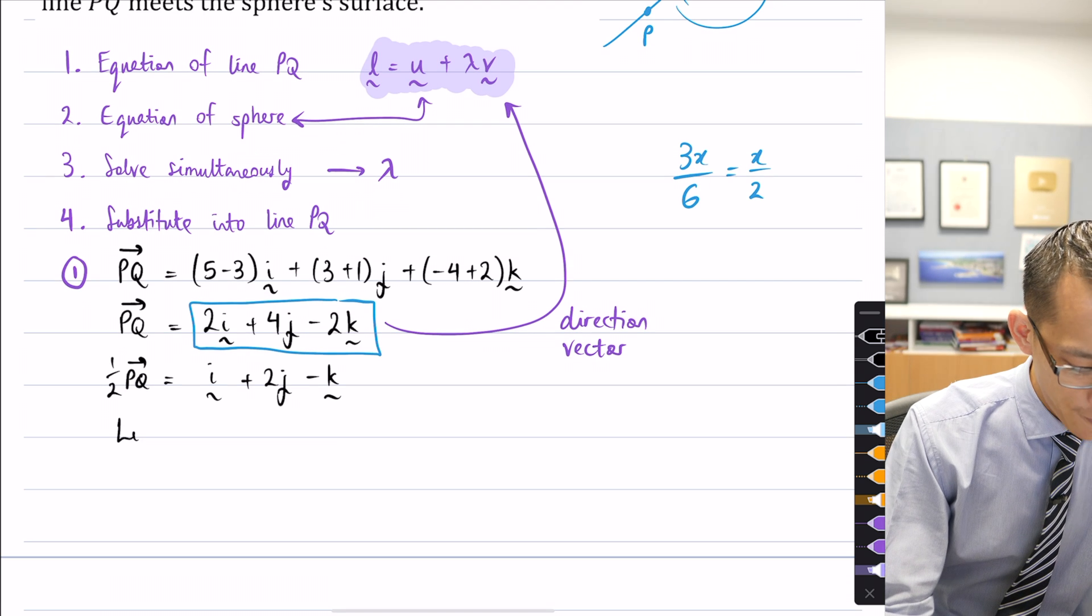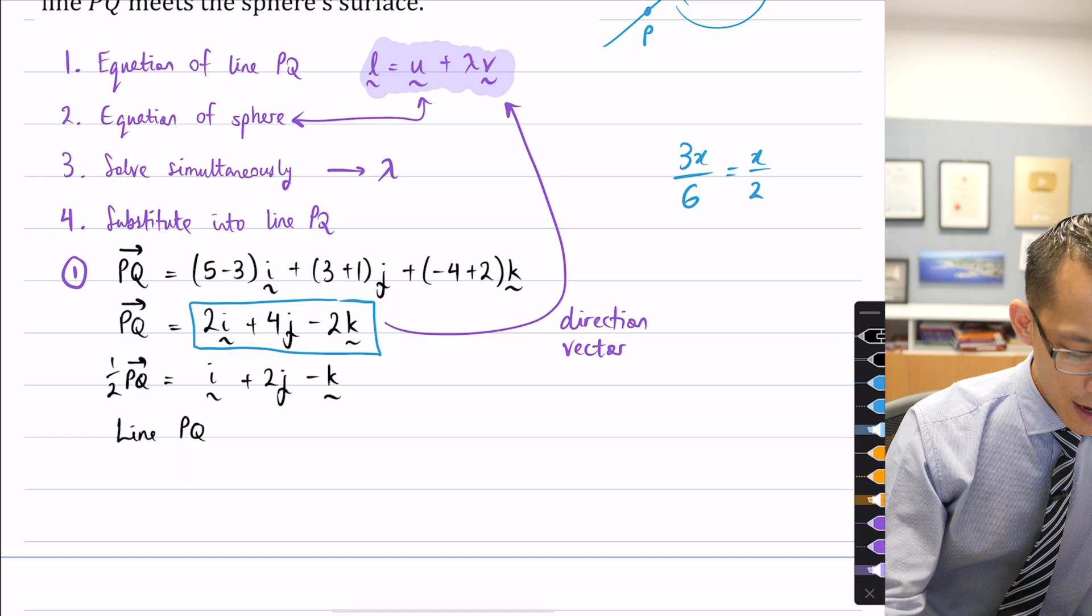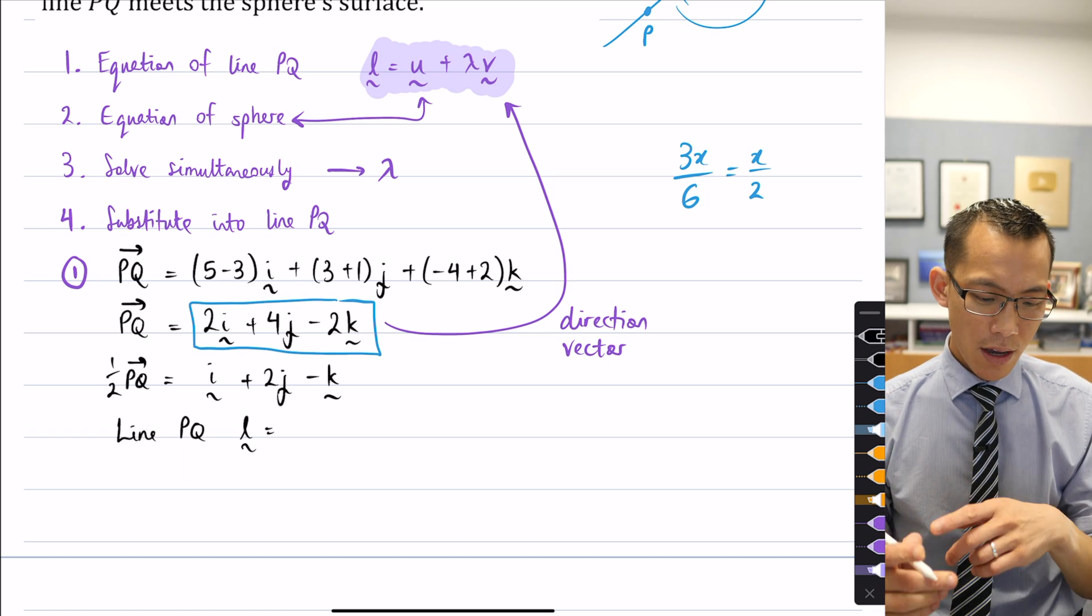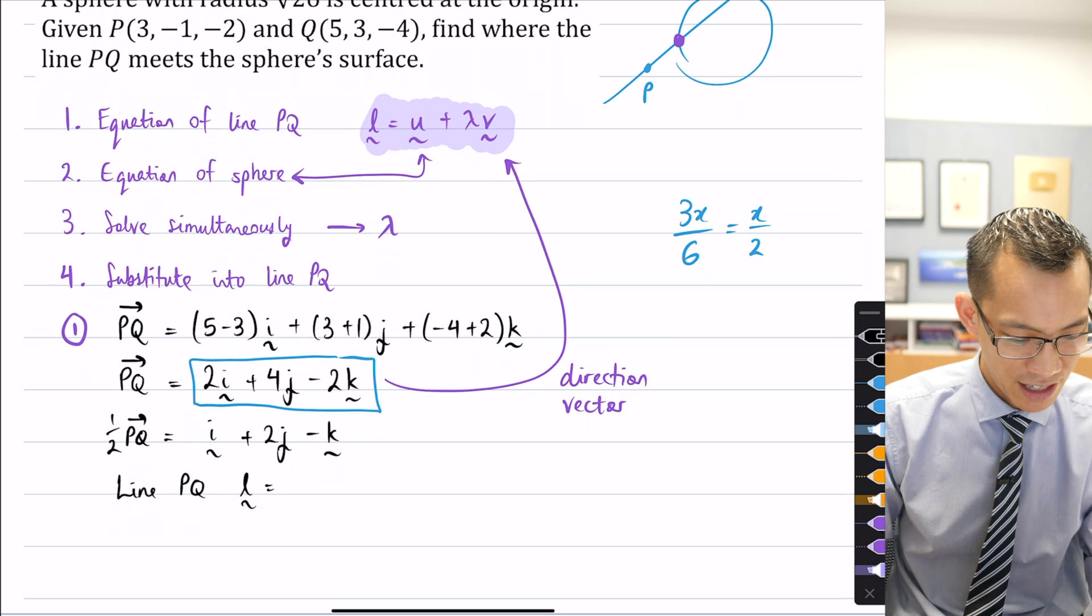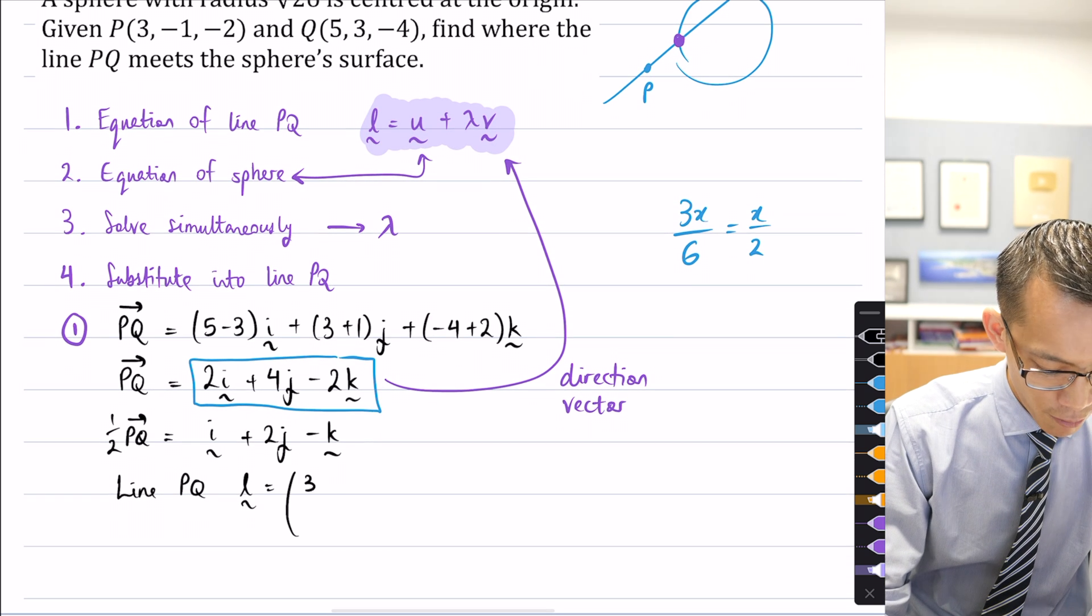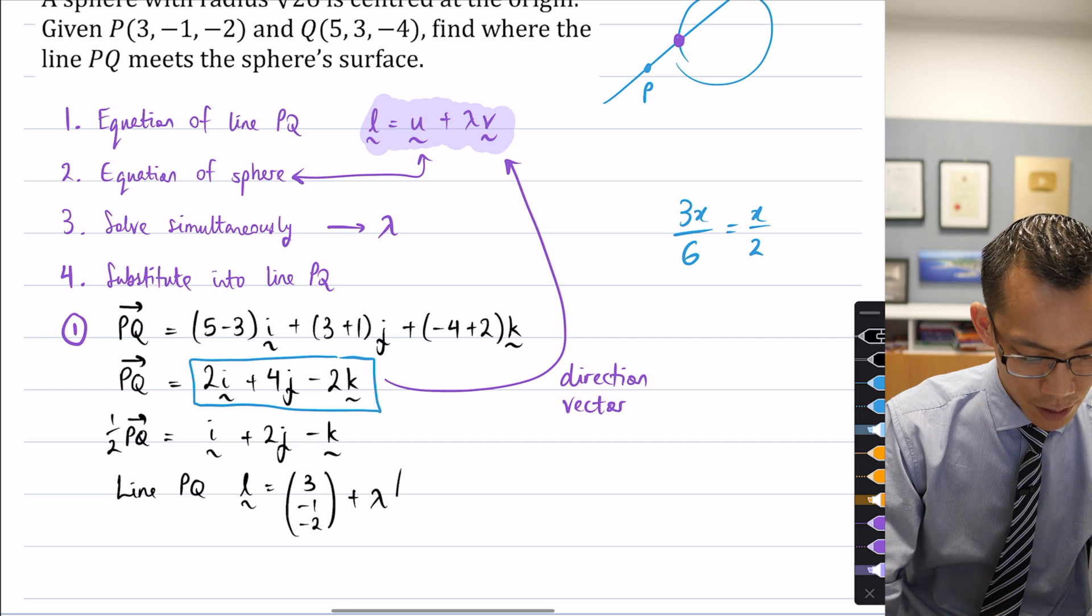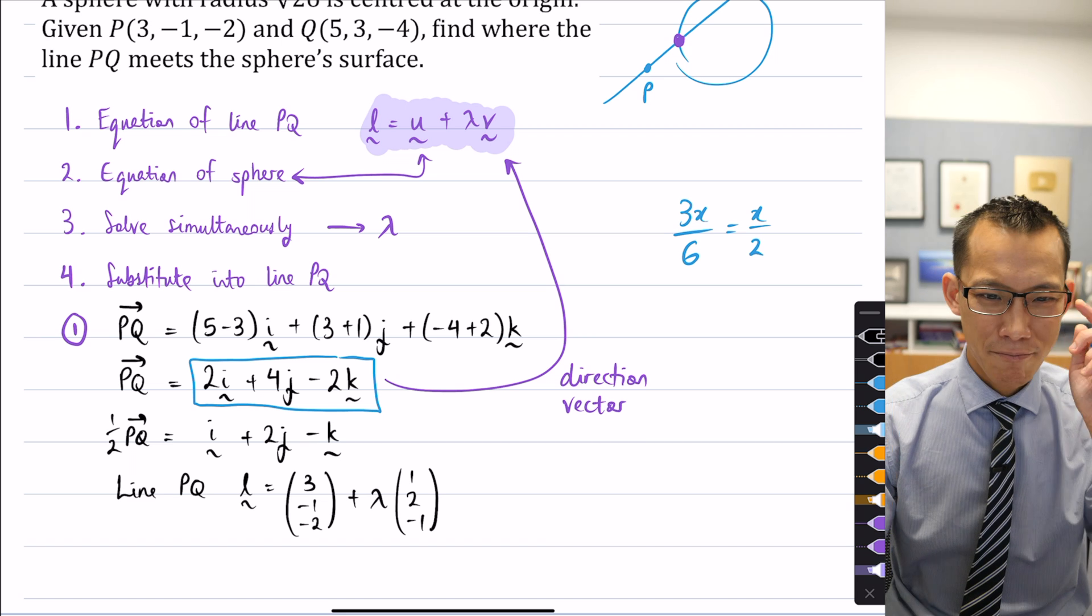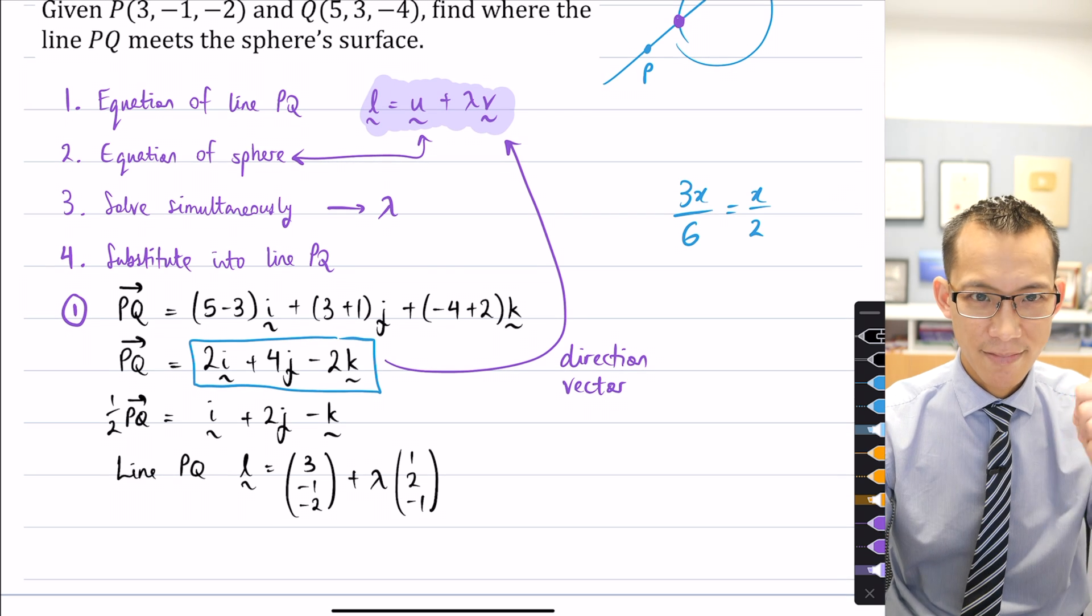So now I'm just about finished with part one of my question because I can now say that line PQ, maybe I'll just use L, is equal to, well, I can use either of P and Q as my position vector. Let's just use P. Three, negative one, negative two. Here comes the lambda that was mentioned before, and then we just decided, what's that? One, two, negative one. So far so good. How are you feeling at the moment? Okay, happy times.